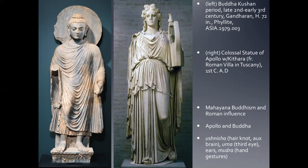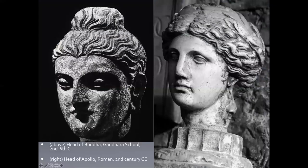The differences lie in the Buddha's specific iconography: the ushnisha — his auxiliary brain — represents the spiritual brain he developed after becoming enlightened; the urna is the third eye; and the mudra refers to the hand gestures. These iconographic elements are first developed here. Compare the head of Apollo and the head of the Buddha to see the similarities. In later styles we'll see things more in line with South Asian art, but for now these retain their Greco-Roman influence.